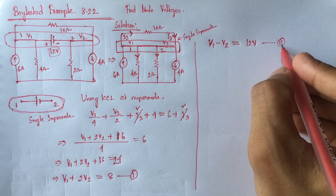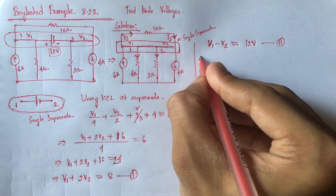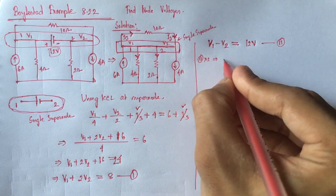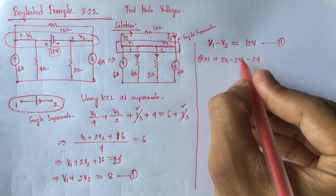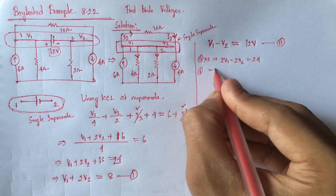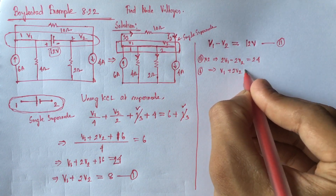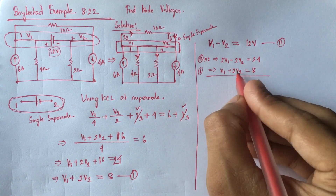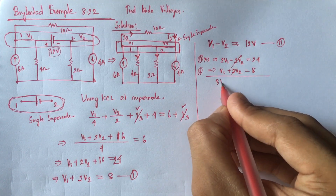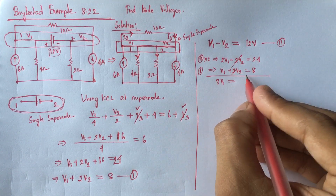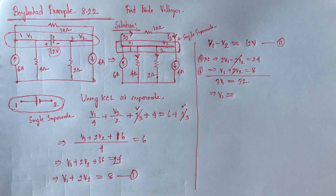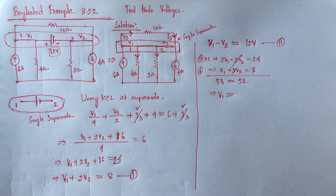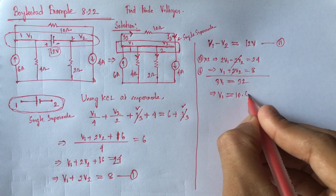Now, if we multiply equation 2 by 2, we will have 2V1 minus 2V2 equals 24. Adding to the simplified equation 1, we get 3V1 equals 32, that is V1 equals 10.67 volts.